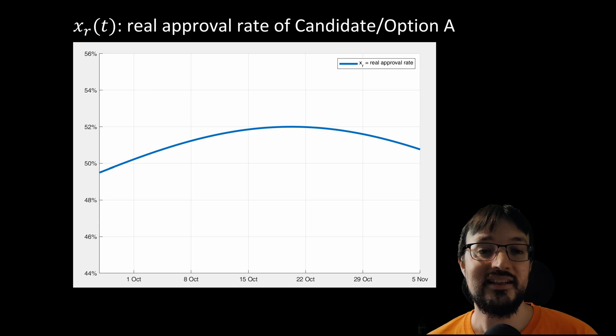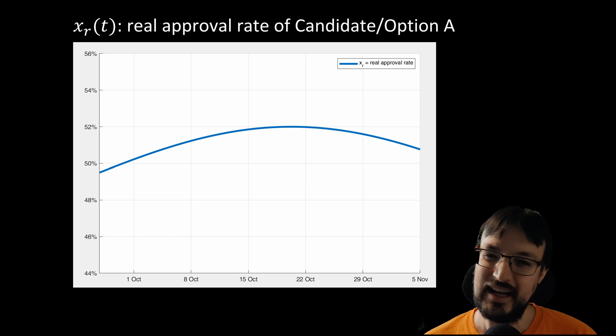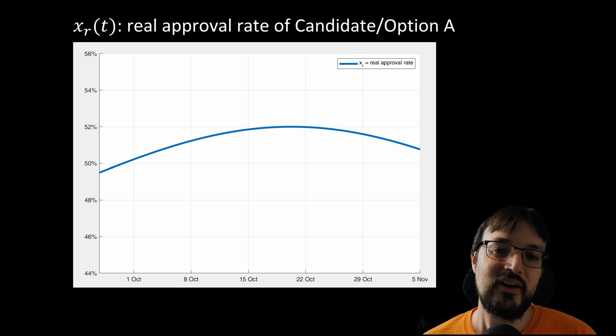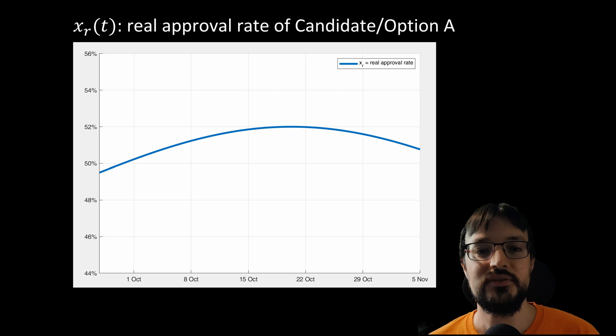However polling can also be seen in a slightly different way as a different control problem, namely a tracking problem. In tracking we have a quantity that evolves with time that we want to track, in this case the real approval rate, by controlling another quantity, in this case the poll result. Even though the tracking problem is a less accurate description of what's going on, because there is really no control here, it is easier to explain and is enough to analyze the process of polling. So to simplify the mathematical explanation for this video I will use tracking even though it's a less precise formulation of the problem.